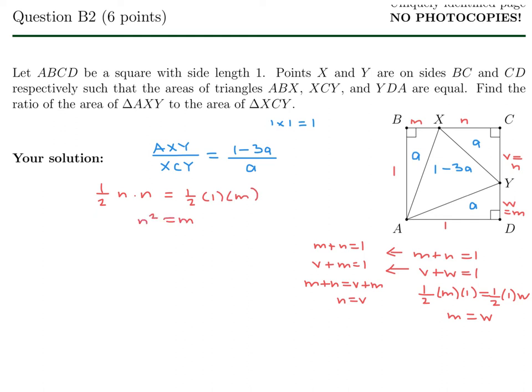And then, where do we go from here? We just utilize this. Now, m plus n is equal to 1. And v plus w is equal to 1. But instead of putting v plus w, I'm going to put v plus m because w is equal to m. So that means that m plus n is equal to v plus m. And therefore, n is equal to v. Okay. That's a nice finding also.